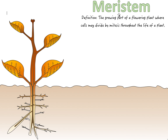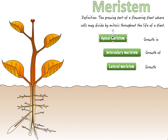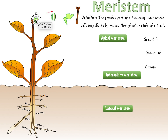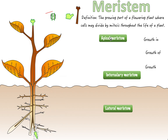There are three types of meristems. The first is called the apical meristem — it's the one at the very top of the stem. When it grows, it's going to grow upwards, causing the plant to increase in height. The apical meristem is not only at the top of the stem but also at the bottom of the root, and both of these places are capable of growth.